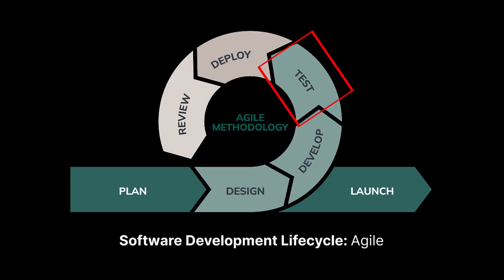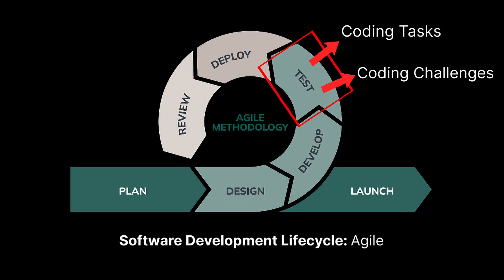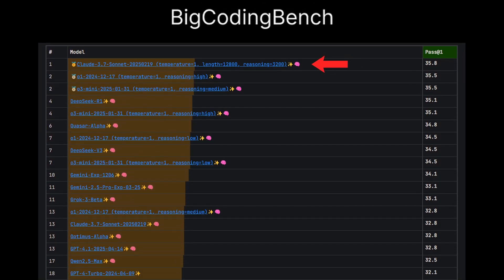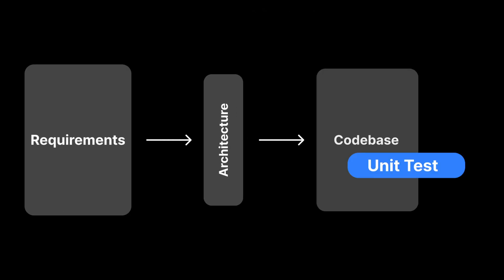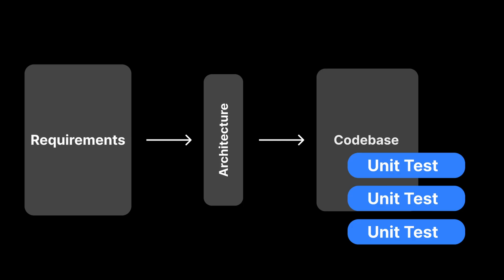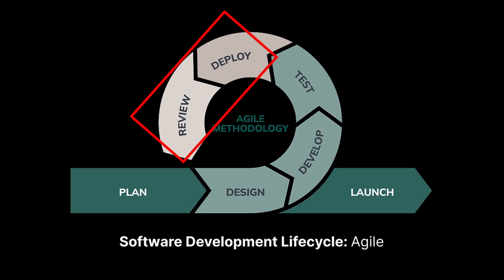For testing, look for benchmarks that measure proficiency in coding tasks and coding challenges. For example, BigCodebench shows that Claude 3.7, OpenAI O1, and the O3 Mini are among the highest-scoring models. Since tests often run in isolation, especially for writing unit tests, we can lean closer to coding benchmarks for this.